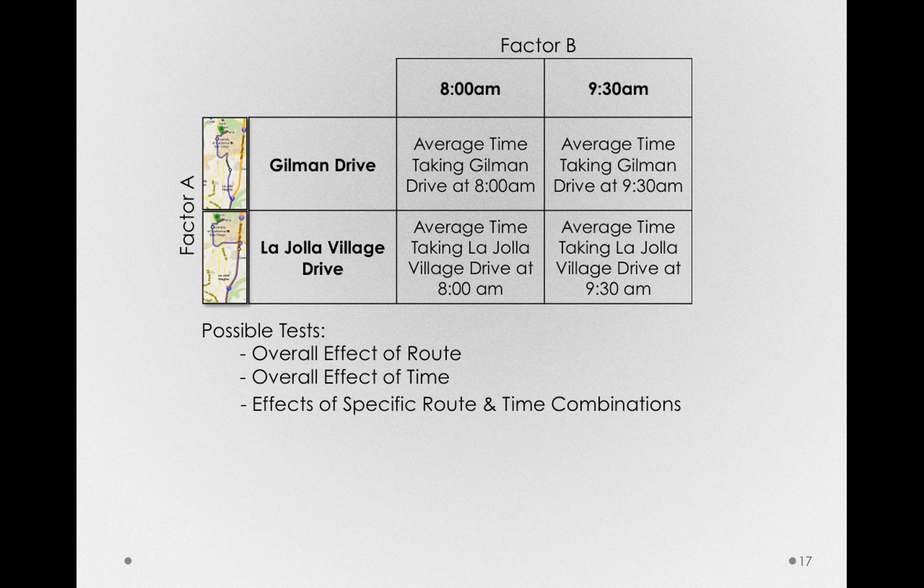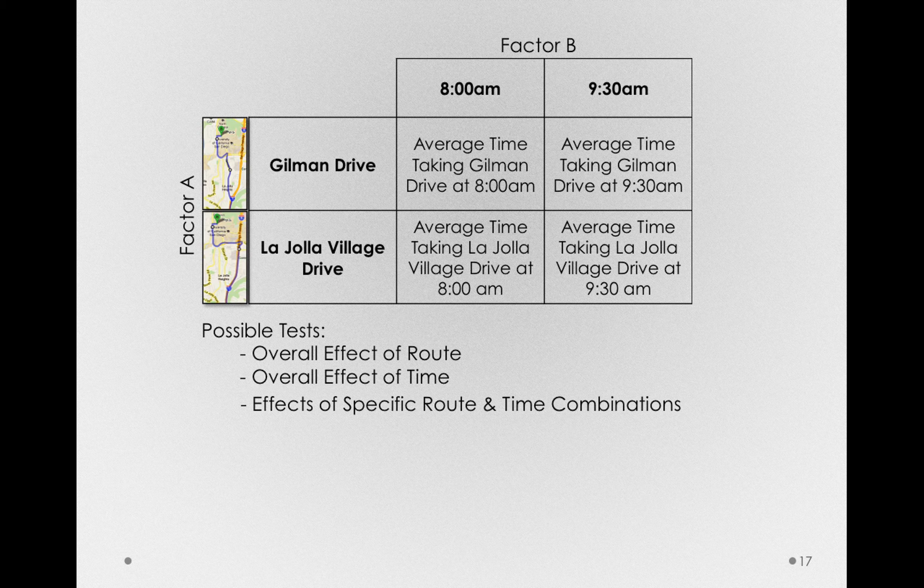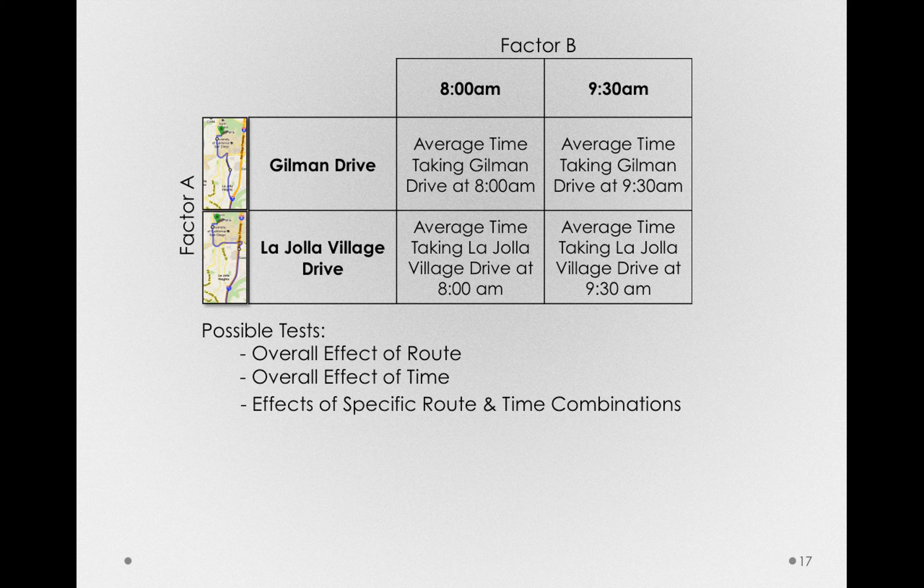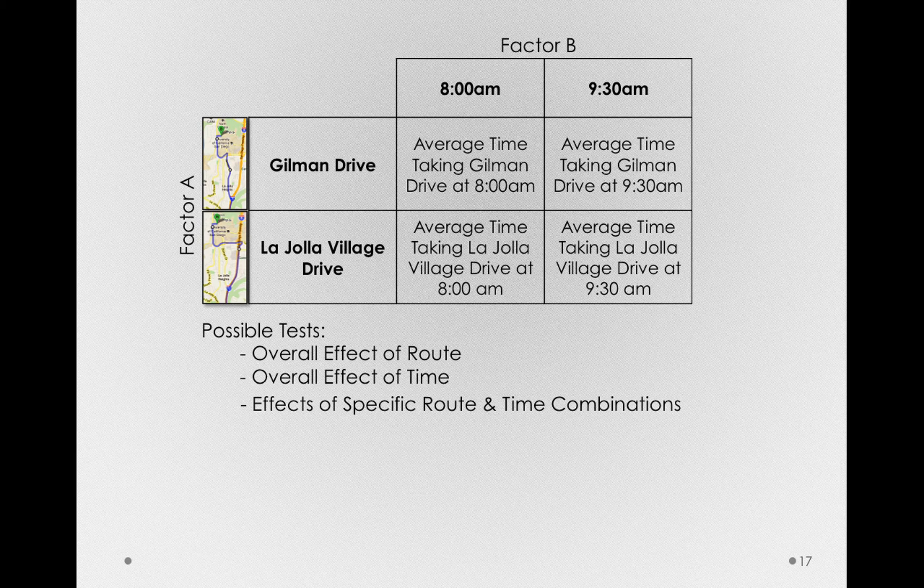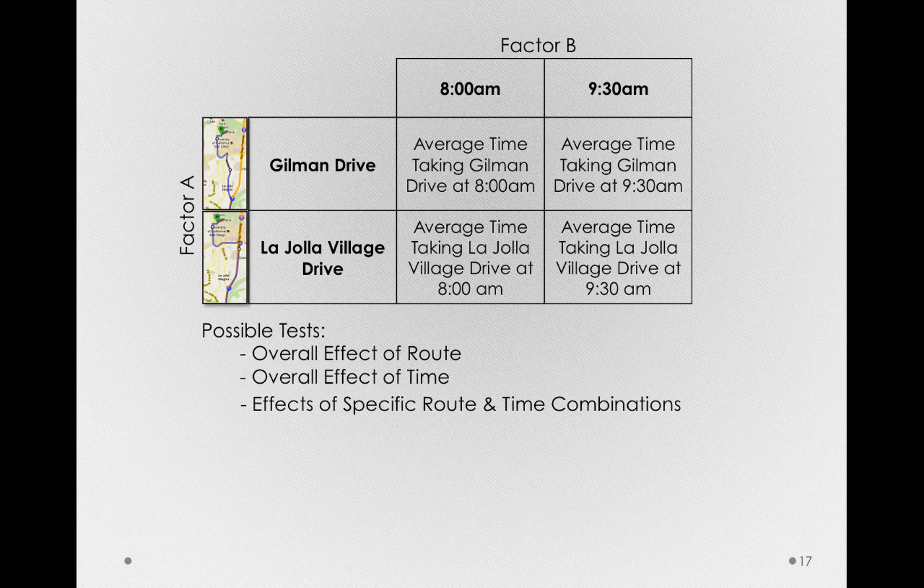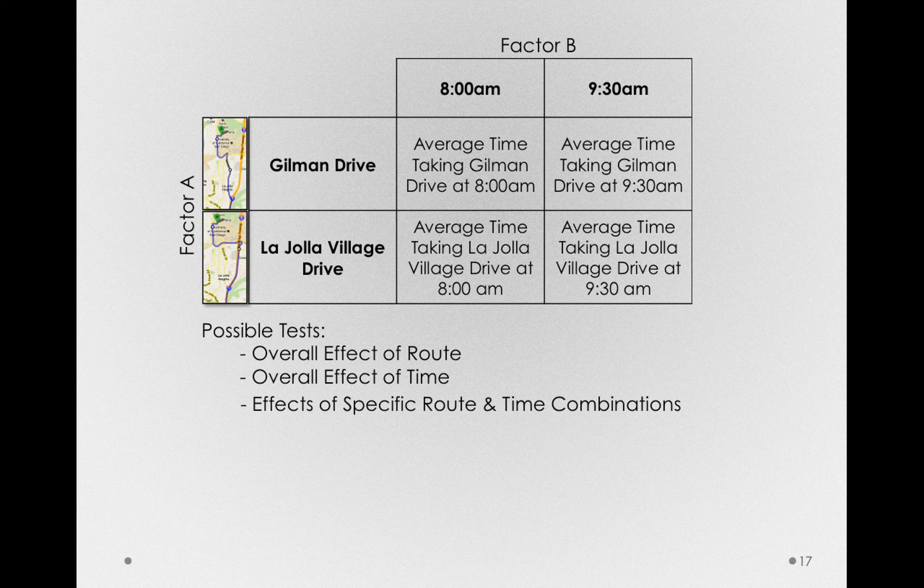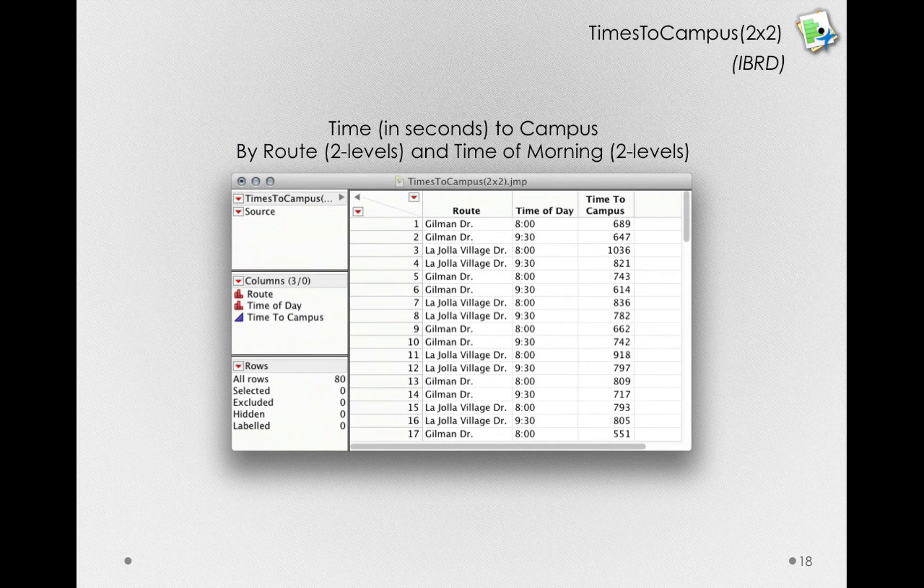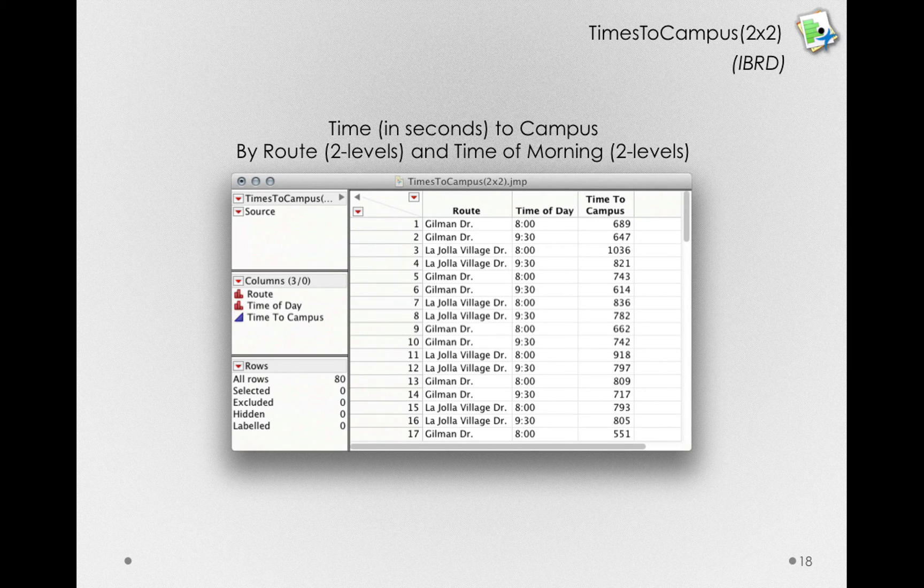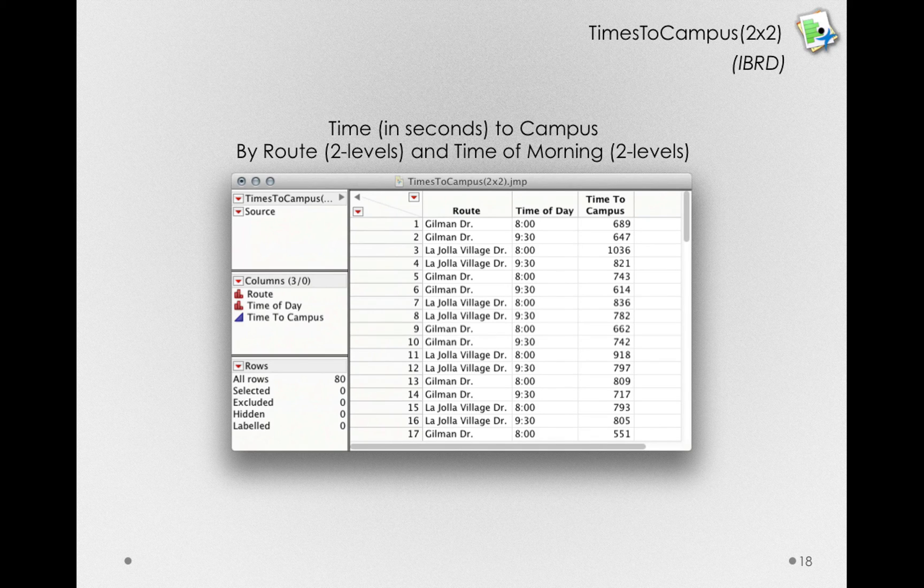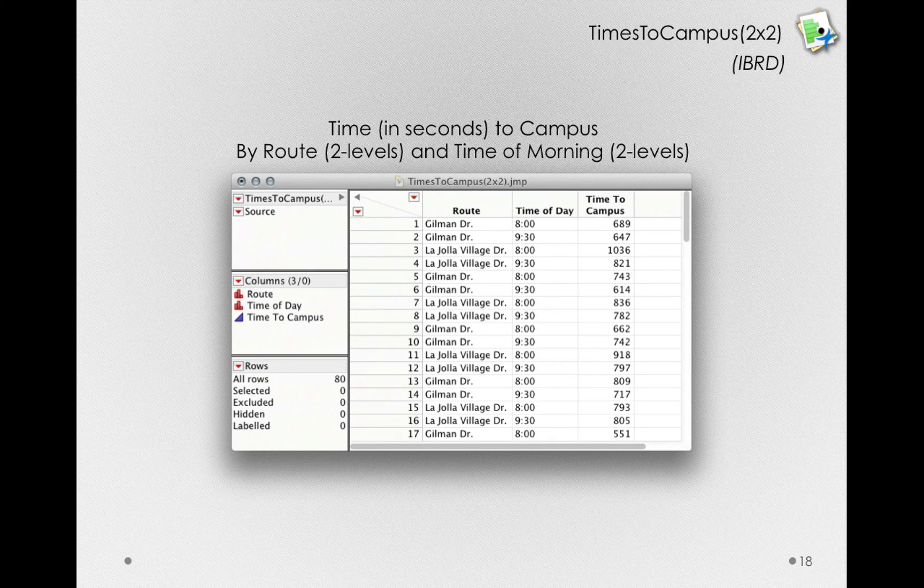Now, in order to do this study properly, so that the inferences we draw from differences we observe are actually valid, I still had to use random assignment. The way it worked out for this study is, I took a large number of days and randomly assigned myself to one of these conditions. That is, some combination here of factor A, the route I was taking, and factor B, what time I left to go to campus. Now, although I did collect a lot of data for this, the data we're going to work through is a little bit cleaned up. So that's why it's listed as IBRD, inspired by real data. Now, there were some violations to assumptions that we'll come back to later, that I had to clean up to look at these data. But the mean structure I'm going to show you, that is the means we observe, are actually honoring the true means that I observed.